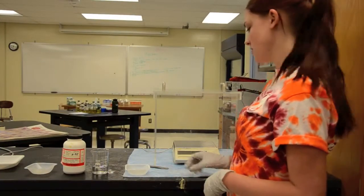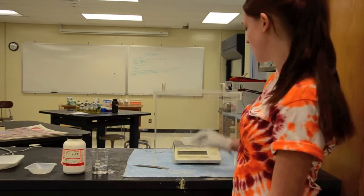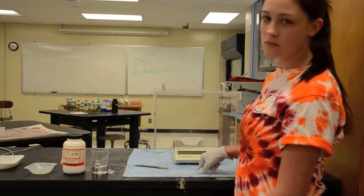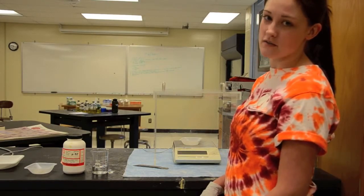To actually measure out a material, first you want to tear the balance with the weigh boat on it. So you're going to put the weigh boat on the balance, hit tear. That way, the only thing it's measuring is what you put into the weigh boat.